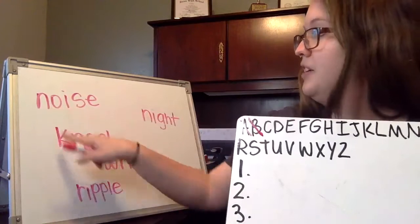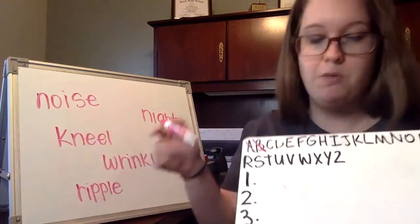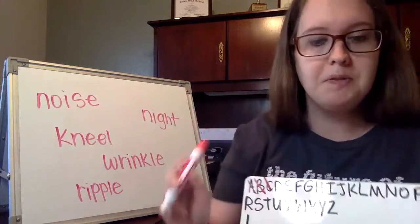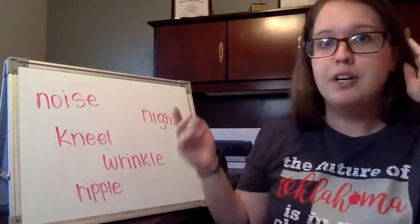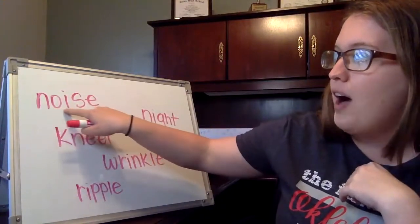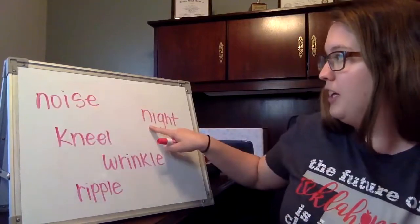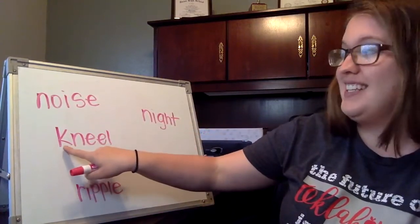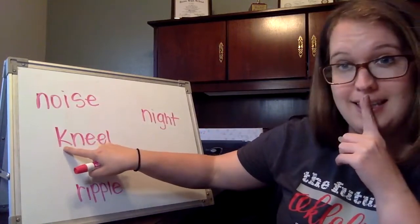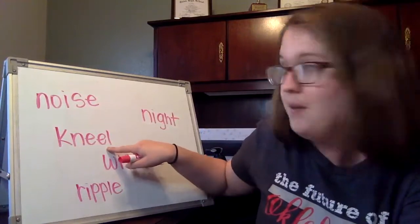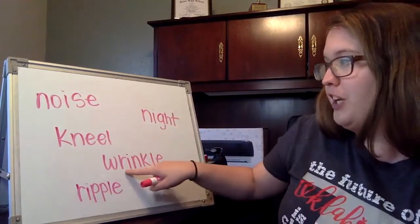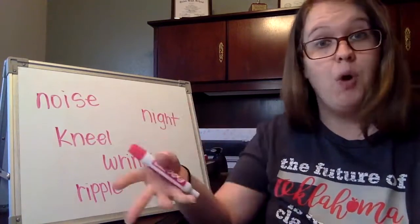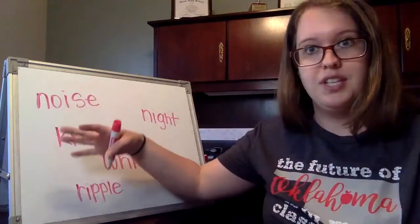Next we'll check out C — any words that start with C? Nope. I apologize, I forgot to read the words with you first, so let's pause for a second — Miss Brooks made a mistake. Let's read the words quickly. This first word is 'noise' — we can see it has our OI sound. Over here we have a tricky word: 'night,' like nighttime. This one is 'kneel' — the K is silent and doesn't make any sound. Whenever you kneel, you're getting down on one leg. The next one is 'wrinkle,' like a wrinkle in your clothes.